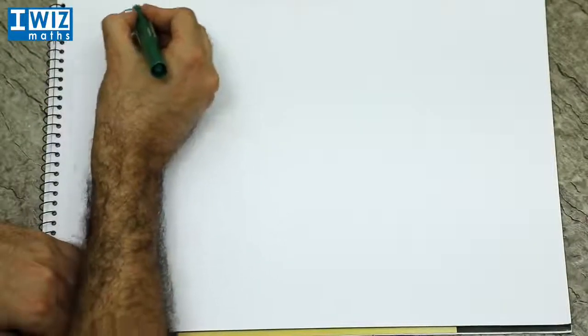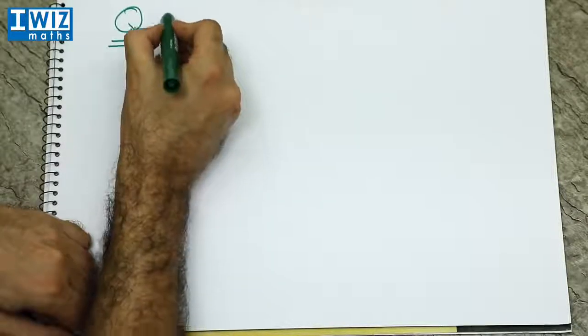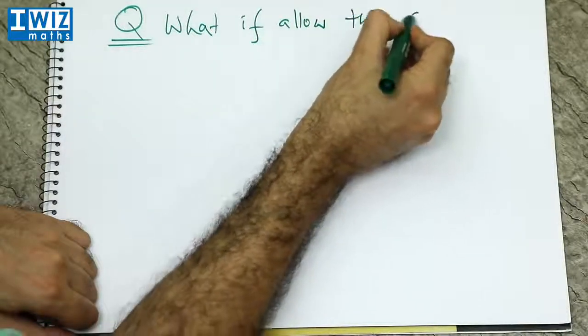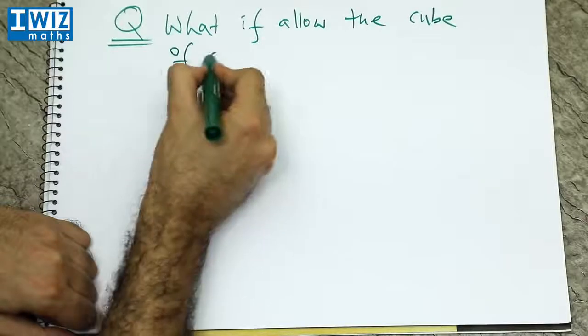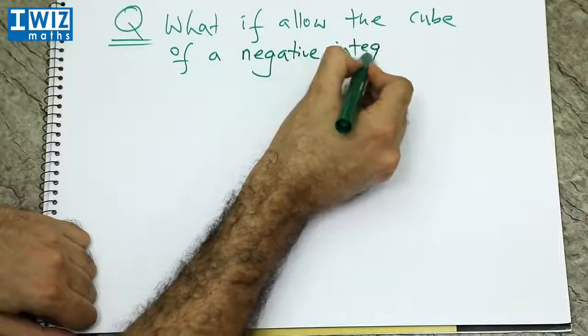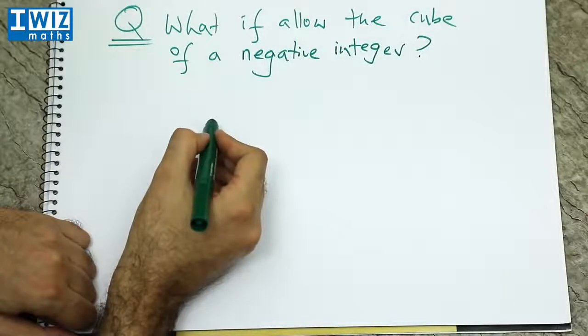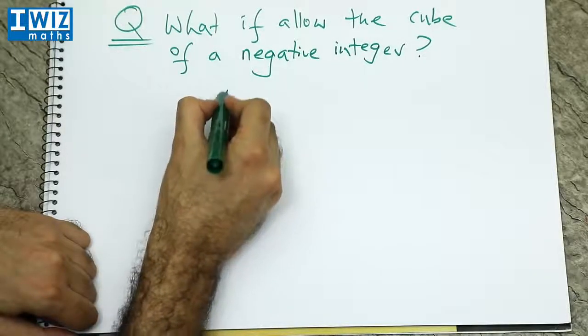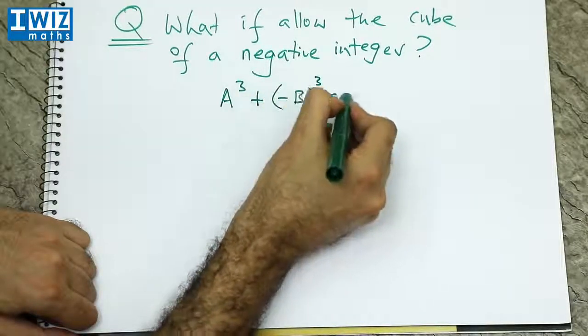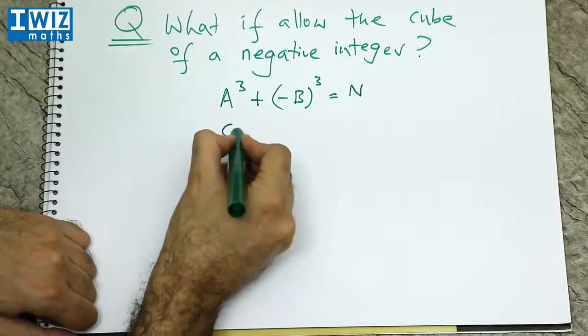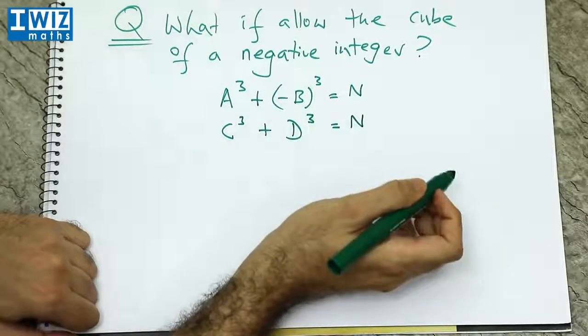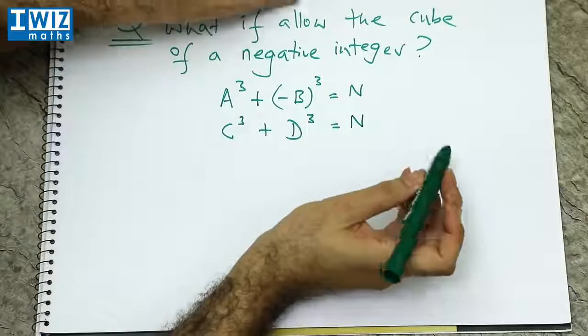Let's change the question a little bit. So the question is now the following. What if we allow the cube of a negative integer? So essentially what that means is we are saying that consider the following situation that we have a cube plus minus b cubed, where you have a cube plus minus b cubed, and that equals the same number.